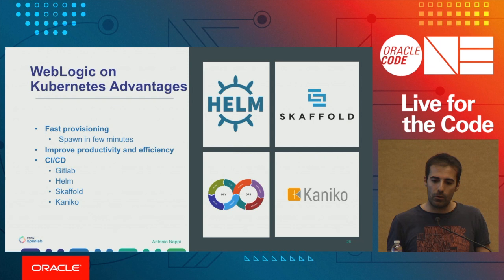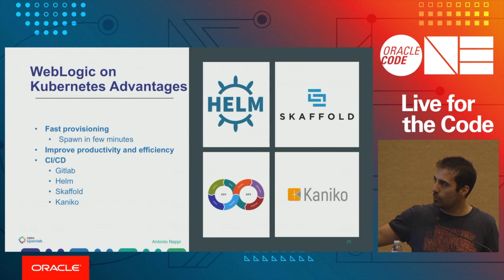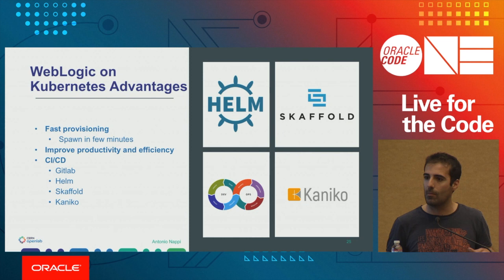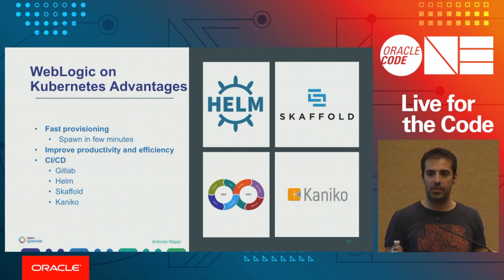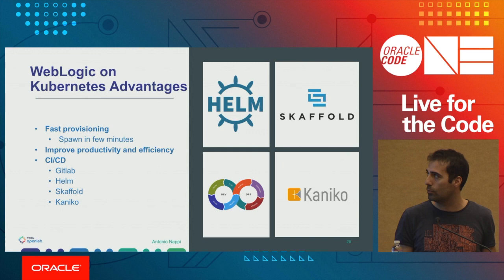Kubernetes also helped us improve our CI/CD pipelines — our deployment cycles are shorter. Tools we use include GitLab to automatically generate and store Docker images, and Helm to package and install WebLogic clusters. We are planning to use Skaffold and Kaniko to allow developers to simply commit a change and have a dev environment running on Kubernetes in seconds.